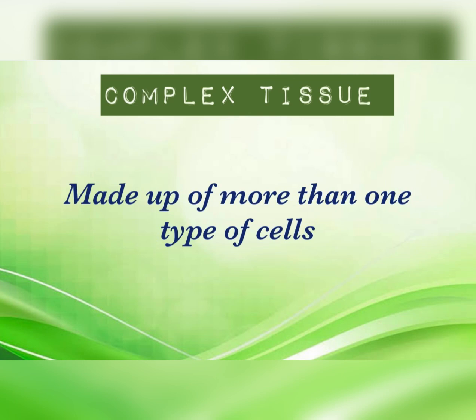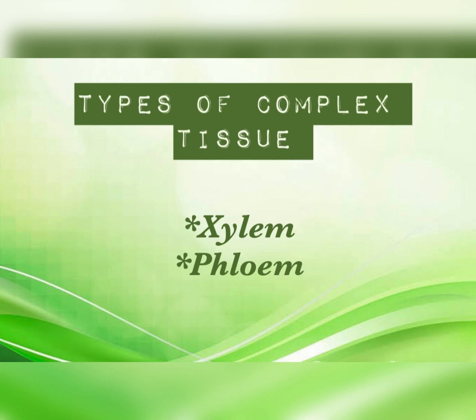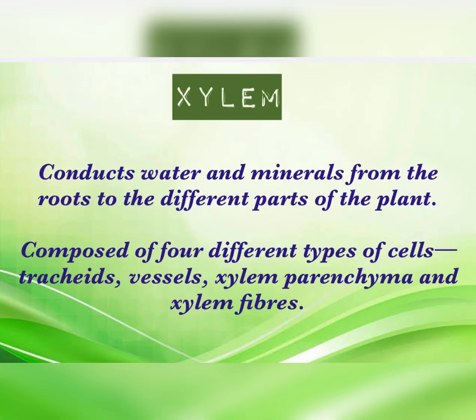Complex tissue is made up of more than one type of cell and includes vascular tissue — xylem and phloem. Xylem conducts water and minerals from roots to different parts of the plant. It is composed of four types of cells: tracheids, vessels, xylem parenchyma, and xylem fibers, each performing different functions.